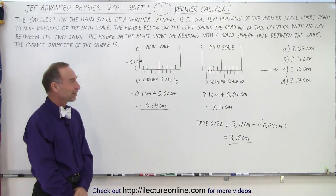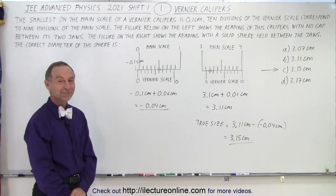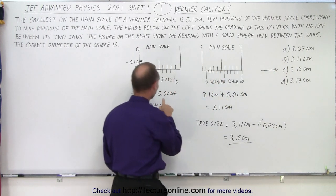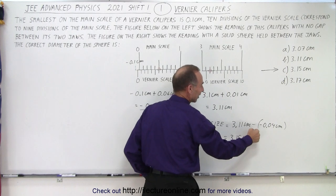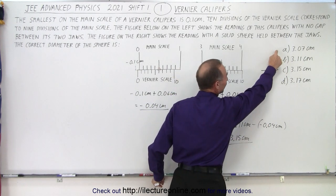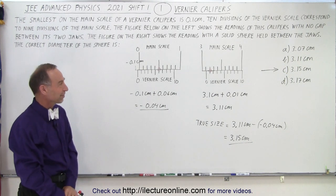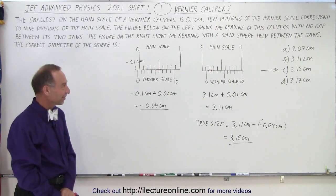So they made sure that they had all the possible mistakes you might make and have an answer for them. So obviously if you didn't adjust you got this answer. If you thought of this as minus 0.06 you get this answer. If you were to add and subtract it you end up with this answer. So yeah, they give you pretty well every possible mistake you make they have an answer waiting for you. That's the nature of this test.